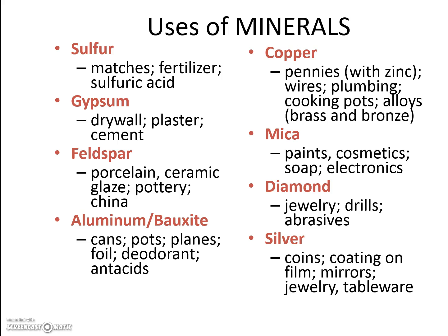Feldspar is used for porcelain and pottery. Aluminum is used for cans, like Coke cans. Copper is used for pennies — the actual penny for money. Mica is used in paints and even cosmetics, like makeup. Diamonds are used for jewelry and drills because they are the hardest mineral on the hardness scale, which we'll learn about in a little bit. And silver is used in coins, mirrors, jewelry, and tableware.